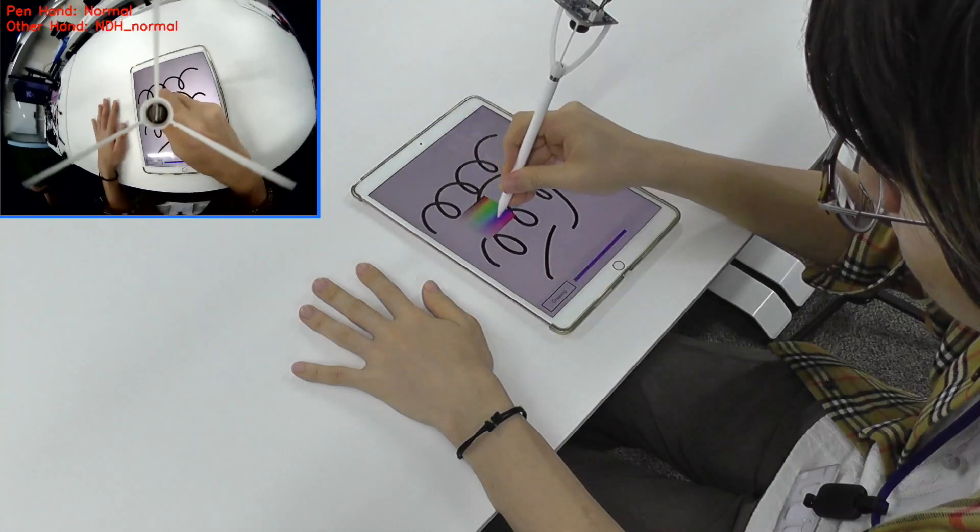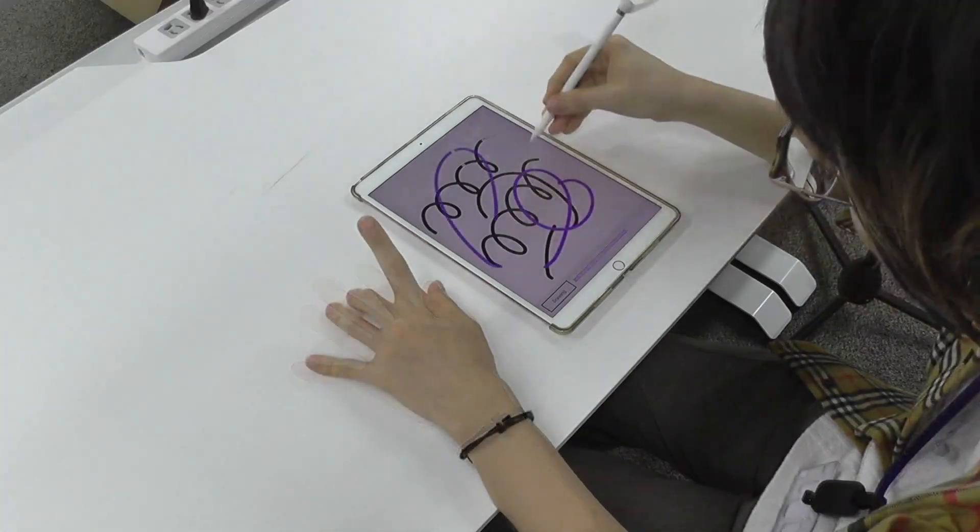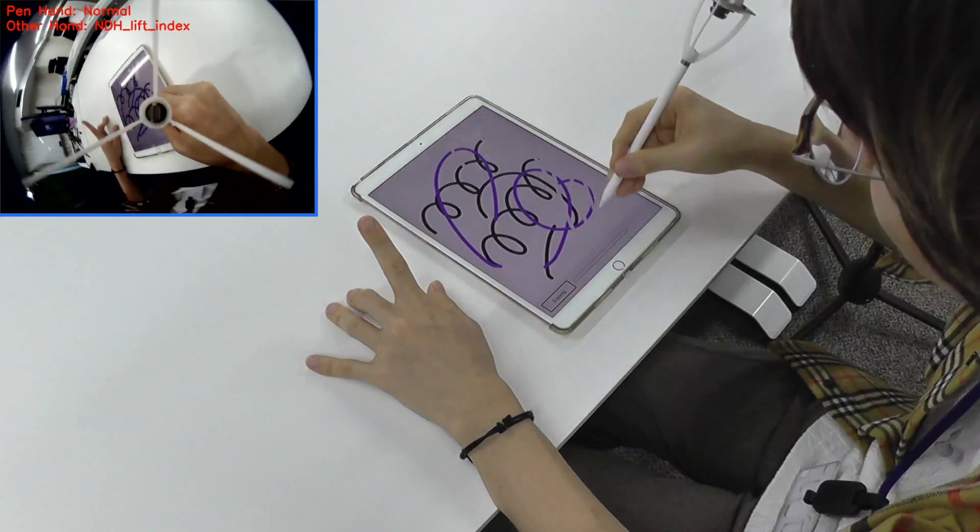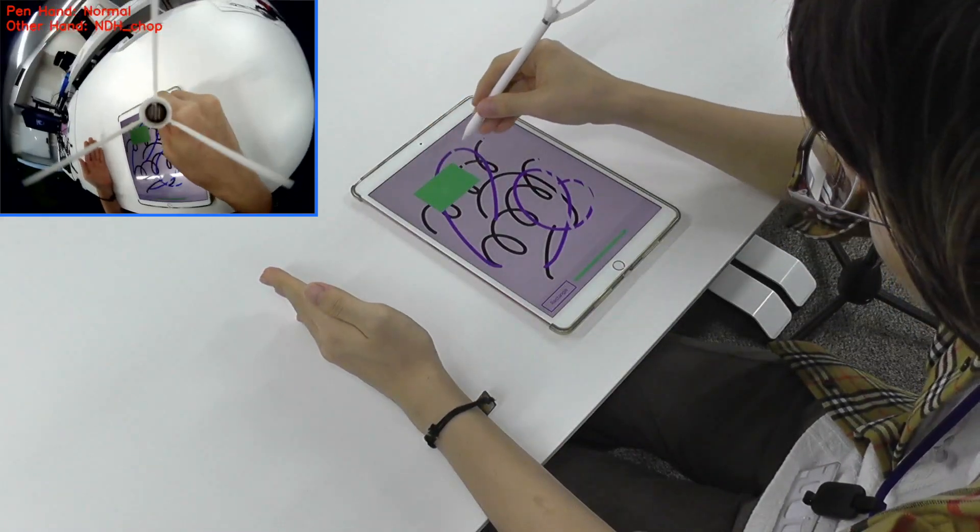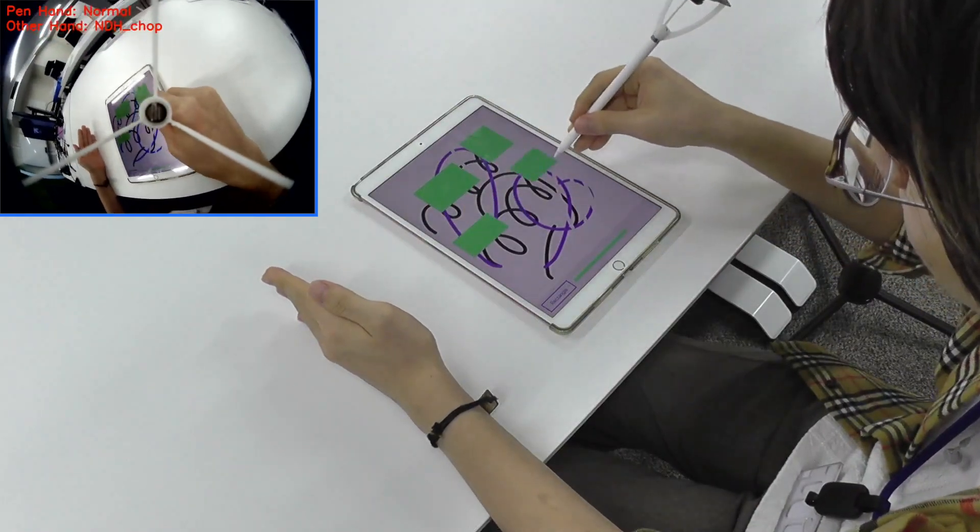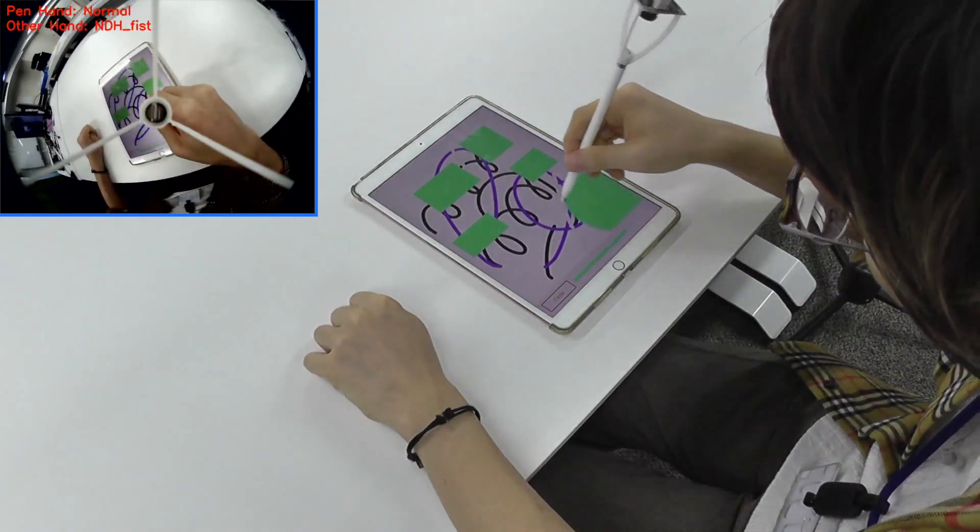For instance, postures of the pen holding hand can be assigned to instant actions such as menus, undo and redo, while the other hand, which is resting on the desk near the tablet, can set maintain modes or quasi modes, such as erasing or drawing geometric shapes.